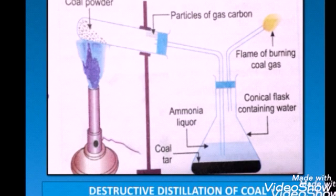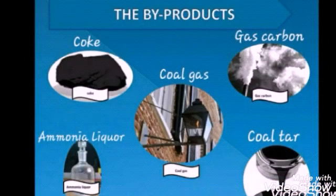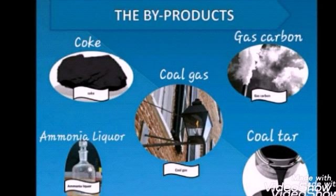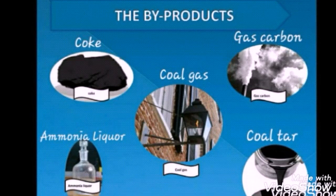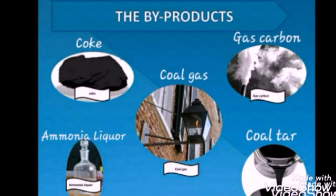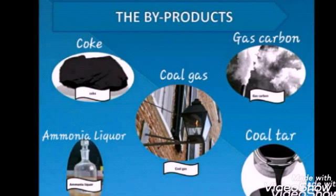What are the uses of these by-products? Coke is used as a household fuel, in the extraction of metals, for the manufacture of water gas, and for the manufacture of graphite. Gas carbon is used for making positive electrodes. Coal tar can be used to obtain several products such as benzene,